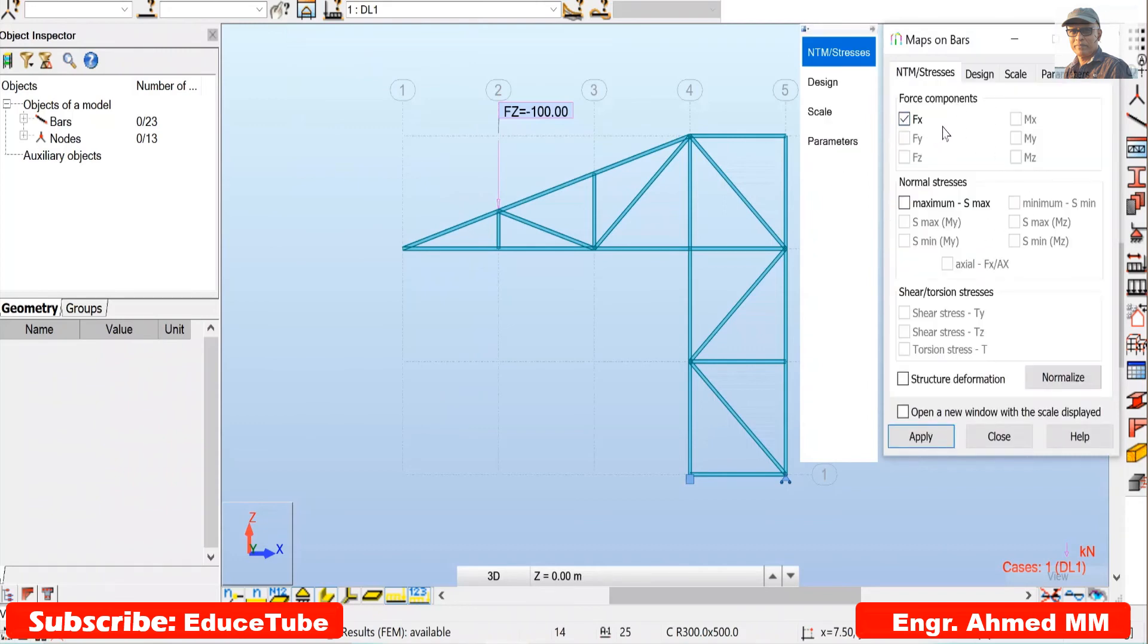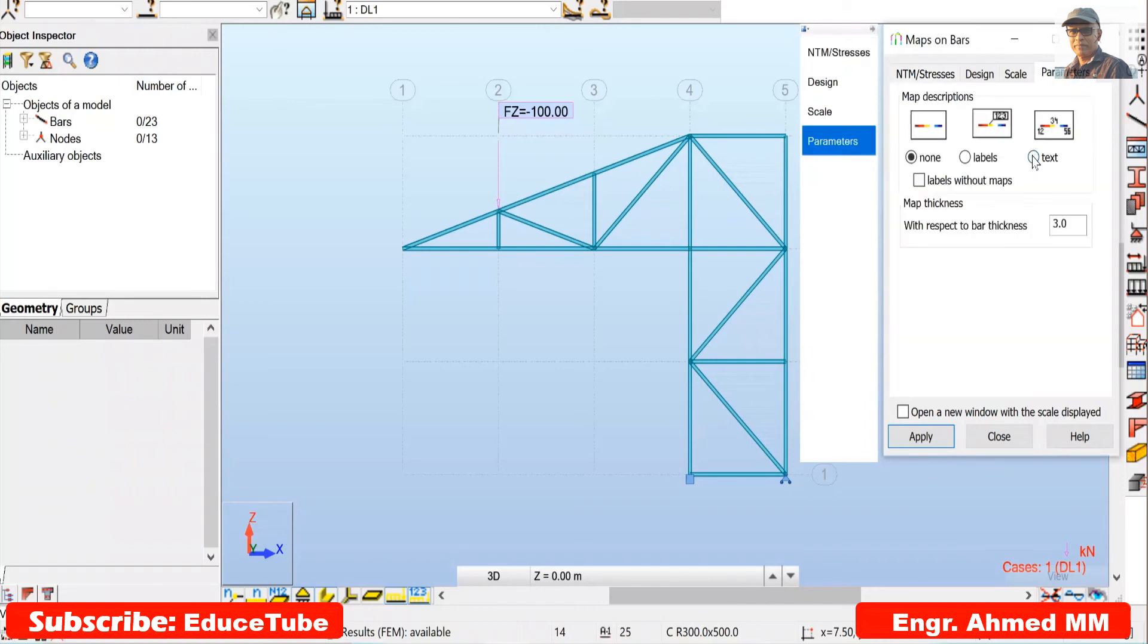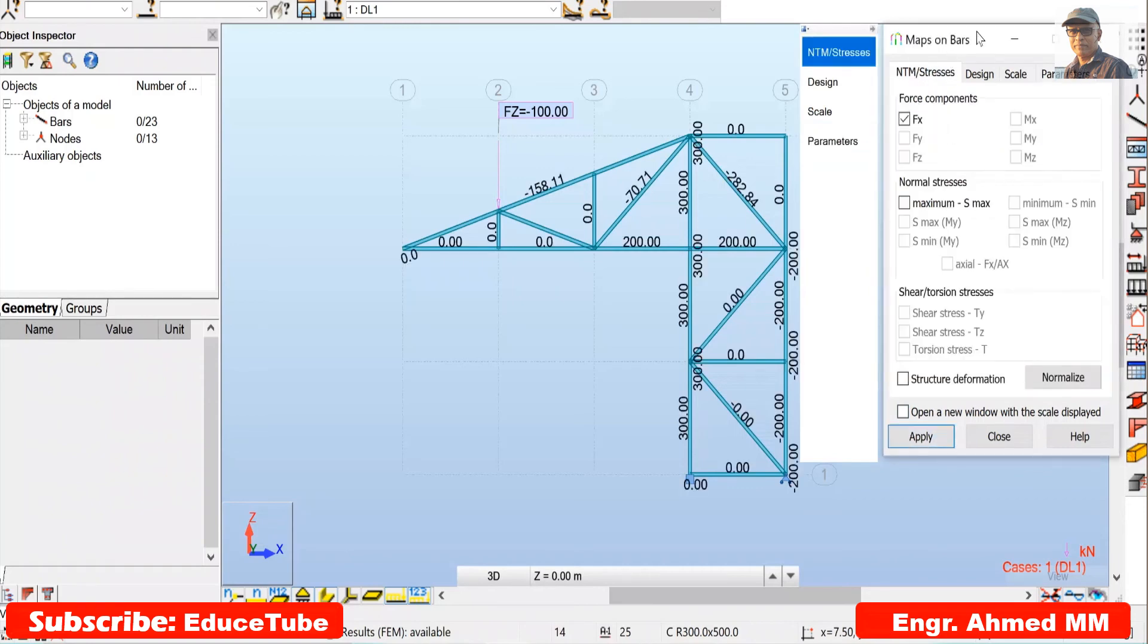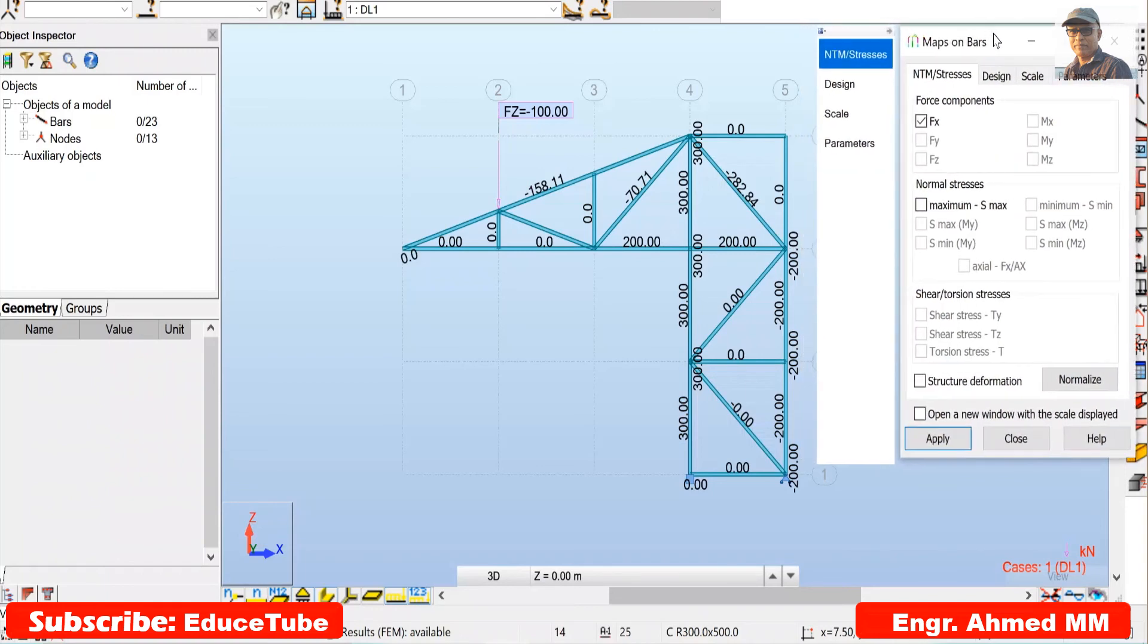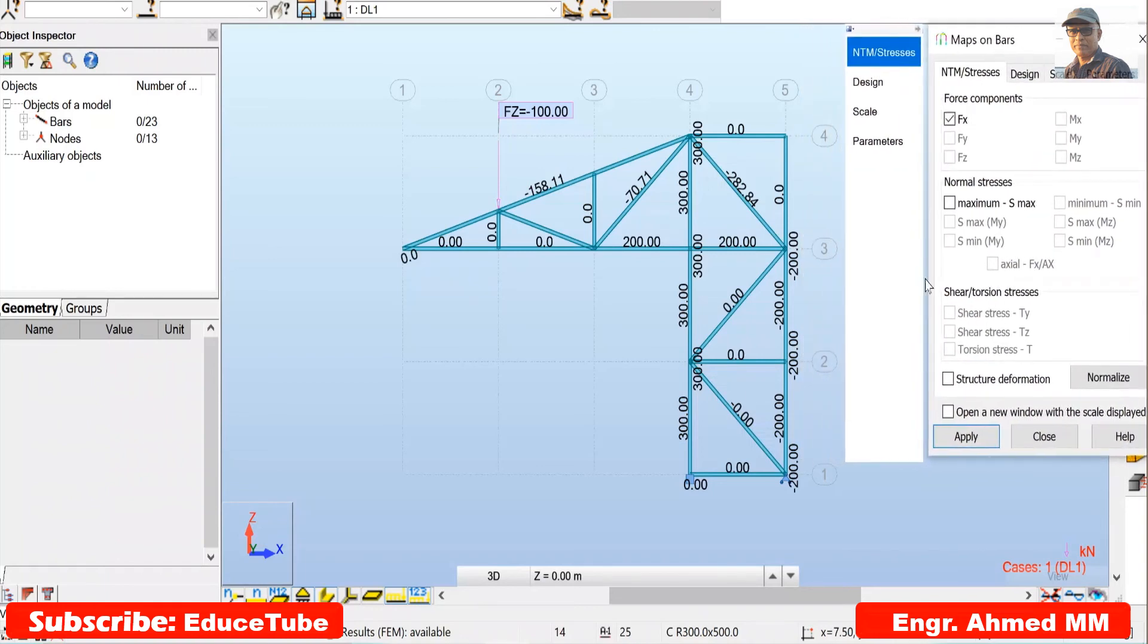I can bring those results. Force component, putting text, applying this. So I got these results. Look at here: zero, zero, zero, all zero force members. Here zero force member, this is zero force. Exactly what we got in our previous slides.